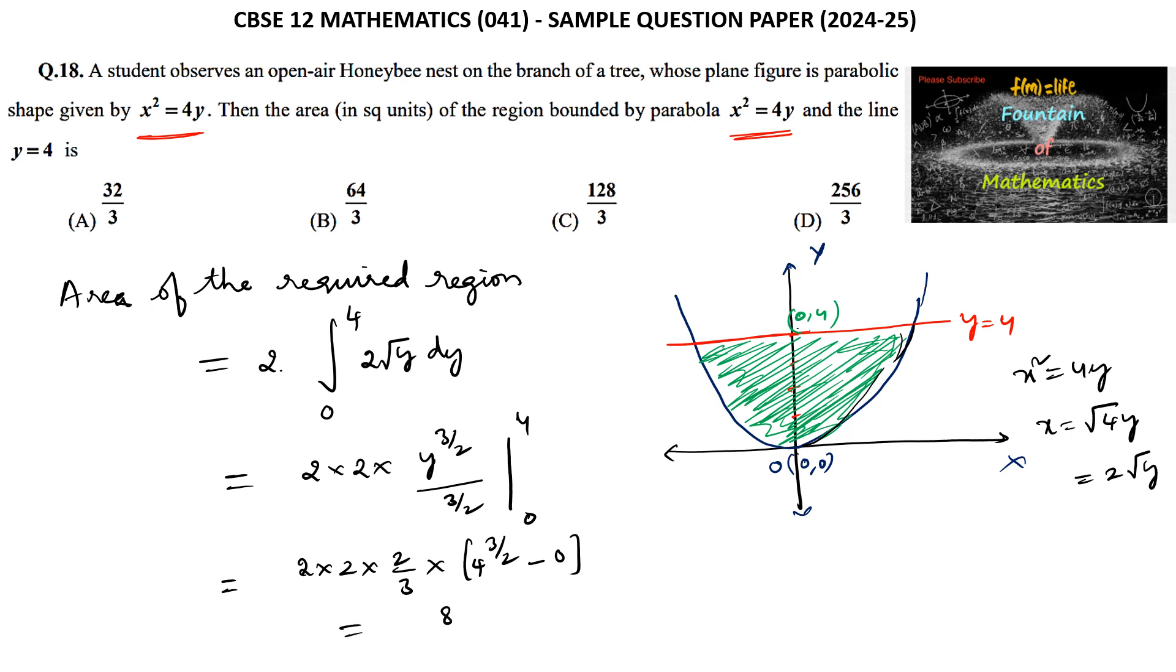So this is 8/3 × 4^(3/2) is 2³, which is equal to 8/3 × 8, which is 64/3 square units. This is the area formed by this parabola curve and the line y = 4.